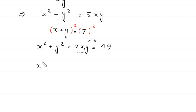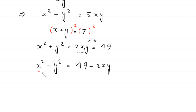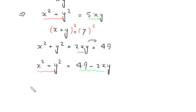This gives x squared plus y squared equals 49 minus 2xy. We notice that the left-hand side of this equation is x squared plus y squared, which also equals 5xy from Equation 1. So we can write 5xy equals 49 minus 2xy.